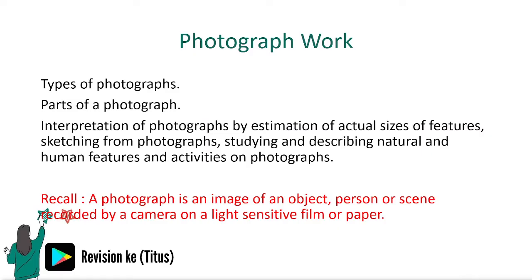It's important to remember that a photograph is an image of an object or personal scene, recorded by a camera on a light-sensitive film or paper. In this section, we are going to look at the types of photographs and parts of a photograph, and then we are going to interpret photographs by estimation of actual sizes of features, sketching photographs, and studying and describing natural and human features and activities on photographs.